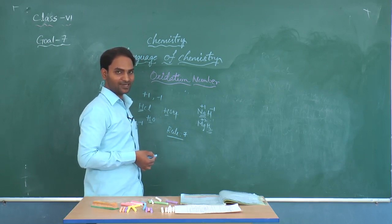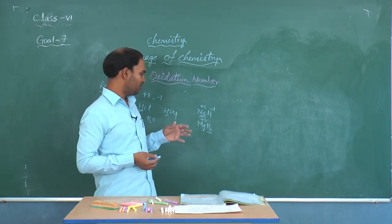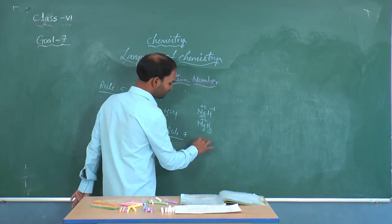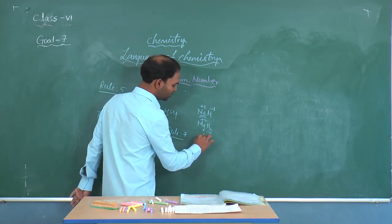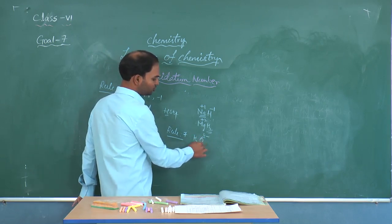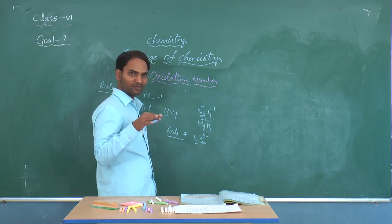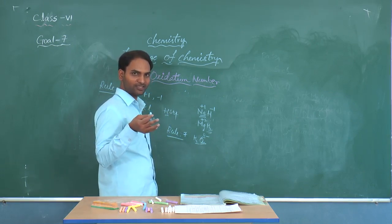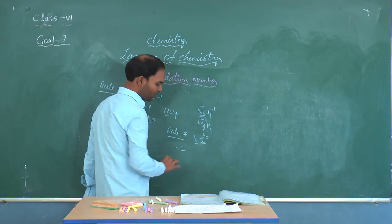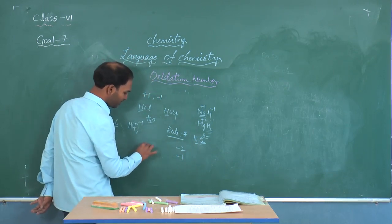Rule 7 tells about the oxidation states of oxygen. In the normal case, oxygen exhibits -2 oxidation state. For example, in H2O the oxidation state of oxygen is -2. In normal oxides it exhibits -2 oxidation state. In the case of peroxides, oxygen exhibits -1 oxidation state. For example, take H2O2 and Na2O2 — these are all peroxides.